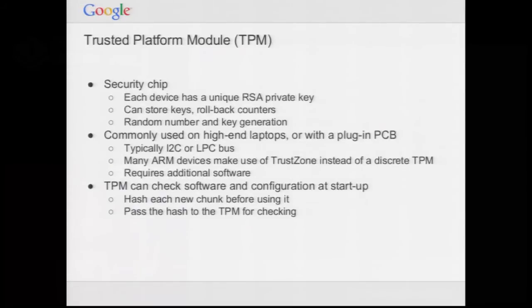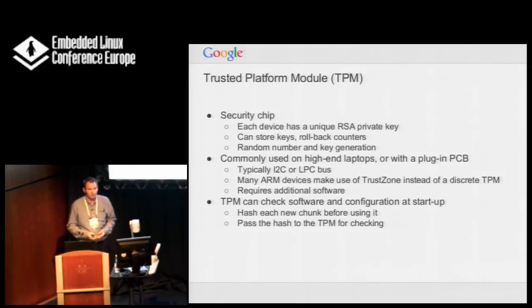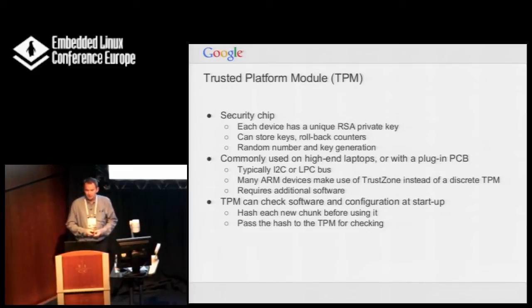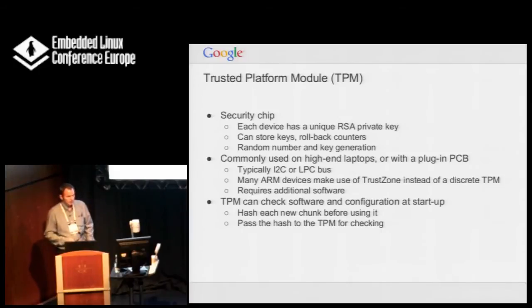I also briefly mentioned a Trusted Platform Module — TPM. This is a security chip with lots of features: it can generate keys, random numbers, and store keys. For verified boot, the main thing we're interested in is rollback protection. We have a version number for the firmware or kernel sitting in the TPM, and when we start up, we compare it and don't allow booting if the version we're trying to boot is older. Once you've ever booted version 3, you'll never be allowed to boot version 2 again.